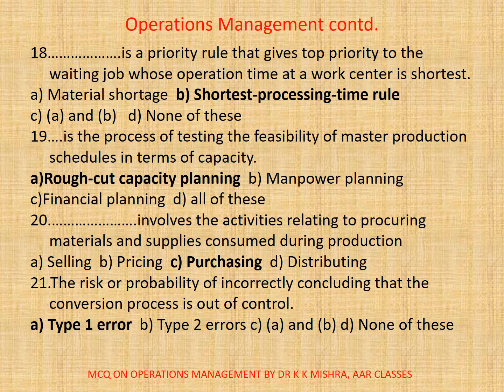18. Dash is a priority rule that gives top priority to the waiting job whose operation time at a work center is shortest. A. Material shortest. B. Shortest processing time rule. C. A and B. D. None of these. The correct option is B. Shortest processing time rule.